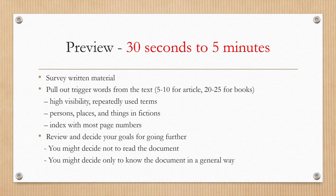The next stage is to preview. Preview the written material that you are looking to read. Plan about 30 seconds to 5 minutes for this activity. Survey the written material and pull out trigger words — 5 to 10 for articles and 20 to 25 for books. Look out for high visibility and repeatedly used terms, persons, places, and things in fiction, and terms in the back index of your book with the most page numbers listed.